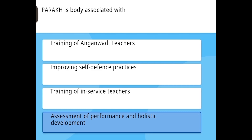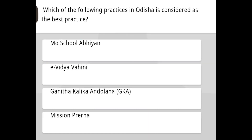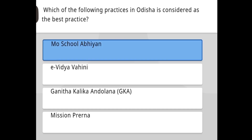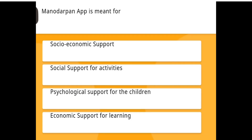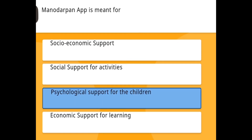Which of the following practices in UTSA is considered the best practice? The answer is Muskul Abhiyan. One Nation One App is meant for psychological support for children.